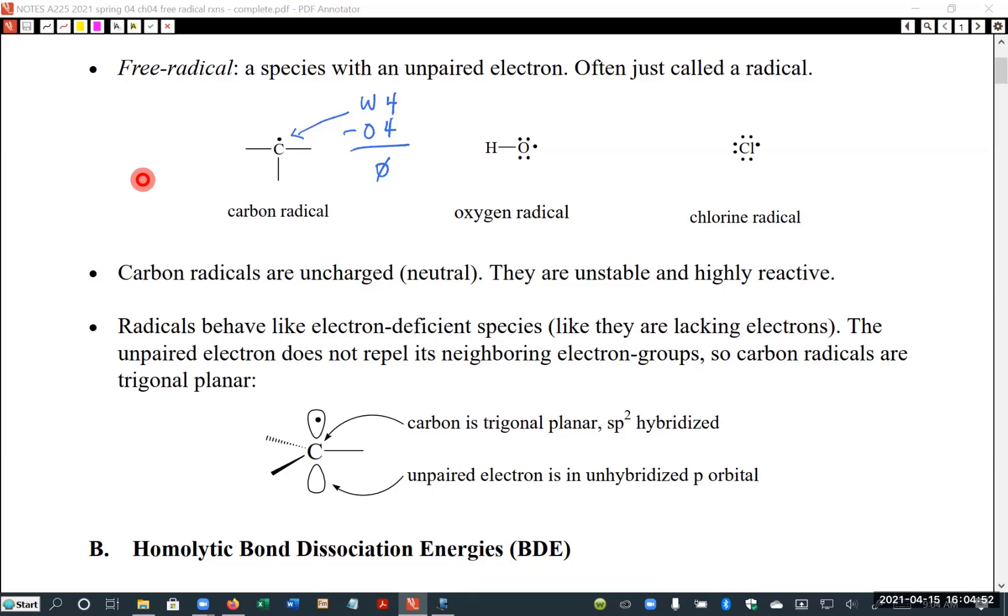And if you recall from carbocations, they're stabilized by attaching carbon groups. Furthermore, carbocations, because they don't have any electrons, they have an empty P orbital and they're trigonal planar.